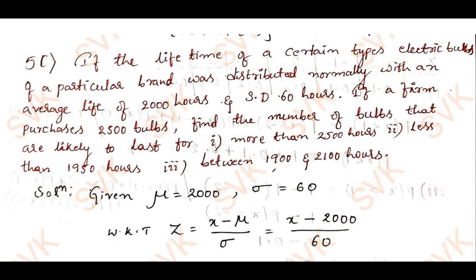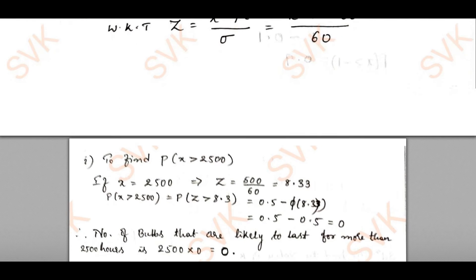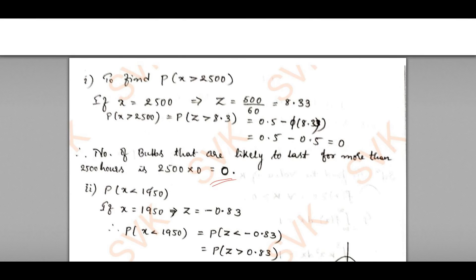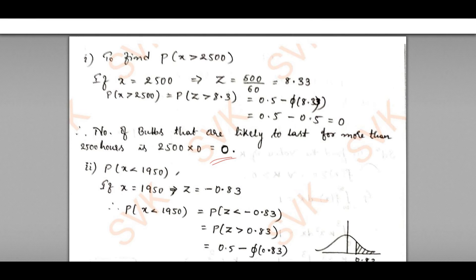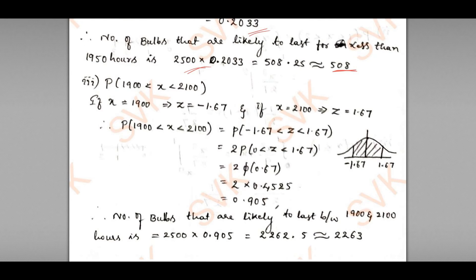Going to the next problem — also discussed in the previous video. You need to get probability of X > 2500 as 0, probability of X < 1950 is approximately 0.2033, and multiplying by 2500 gives approximately 508. The range between 1900 and 2100 gives a probability of 0.905, and multiplying by 2500 gives 2263.